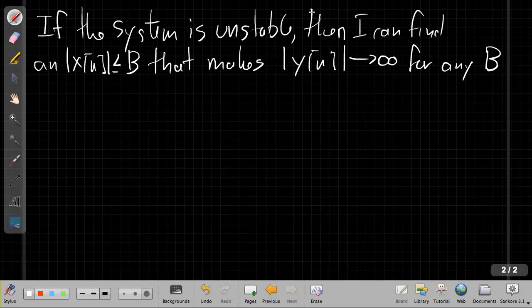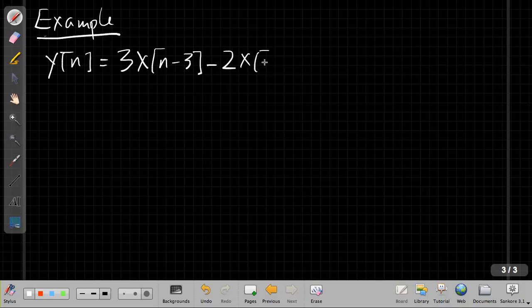So that's how I show that it's unstable. Let's look at some examples of how this works. Let me start this on a clean page. So I'll go through three quick examples here. The first example is imagine I have a system where the output y[n] is 3 times x[n-3] minus 2 times x[n-4]. This is my system, and we're going to check and say, is this stable?